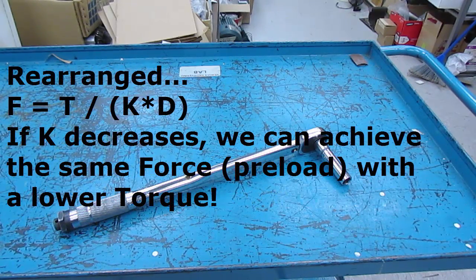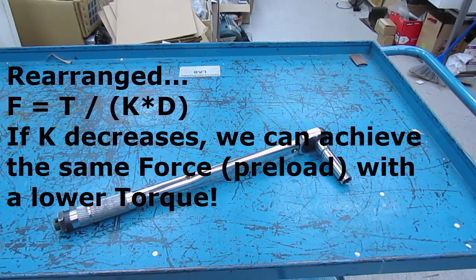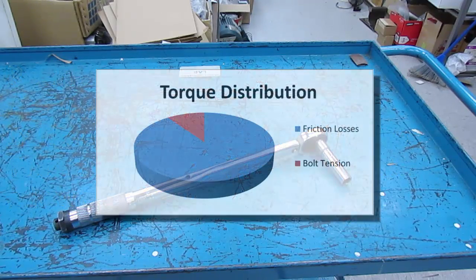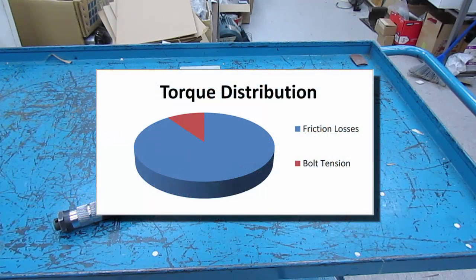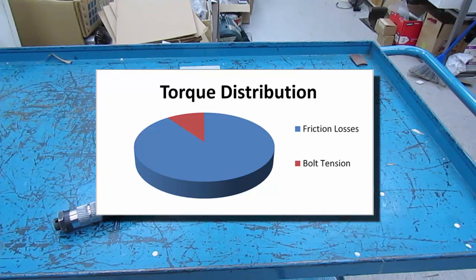And since most of the torque applied is used to overcome friction, almost 90% of it, if you use the dry torque rating on a lubricated fastener, you actually run the risk of stressing the bolt beyond its yield strength.